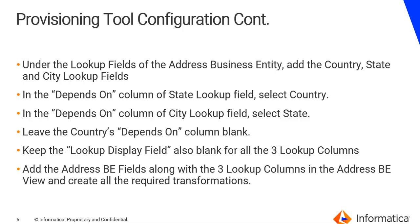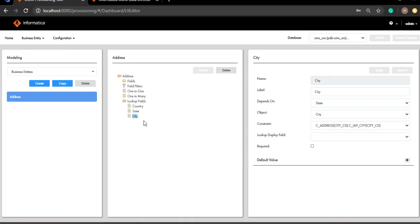Once done with that, the important thing is that I have to set the depends on column, which basically helps us to configure the dependent lookup. So the state is going to be depending on the country and the city is going to be depending on the state. And the country's depends on column will be blank. So like I said, the country is going to be blank, city is going to be depending on country and state is depending on city.